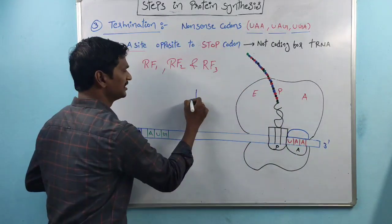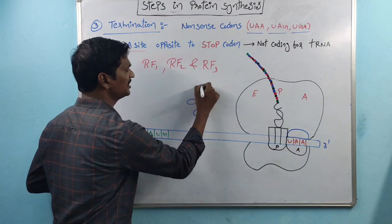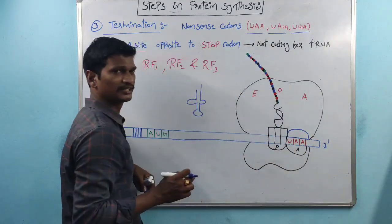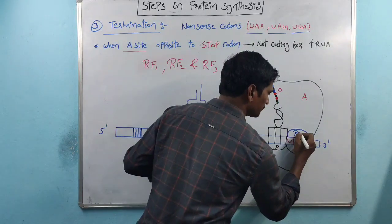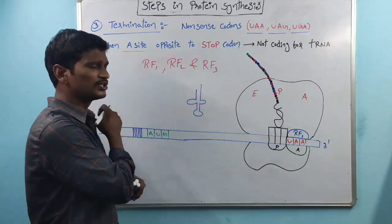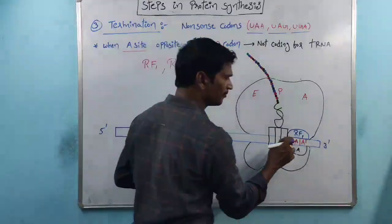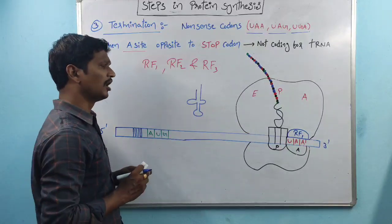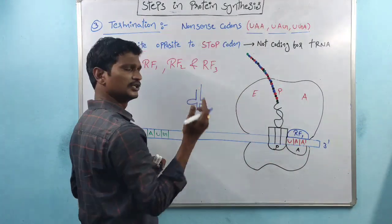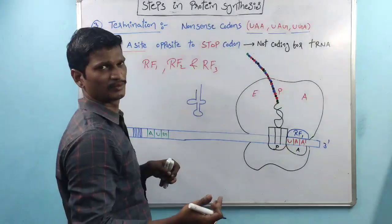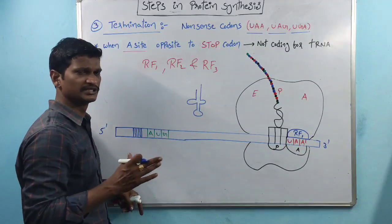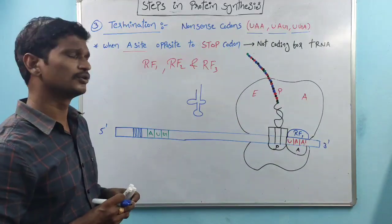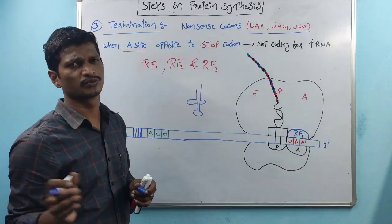This is the releasing factor. Once the releasing factor binds at the non-sense codon, protein synthesis will be stopped. Automatically, the 30S subunit is dissociated, the 50S subunit is dissociated, and the polypeptide chain is dissociated. The termination of protein synthesis is especially done by the non-sense codons. Non-sense codons do not code for amino acids; they code for the releasing factors.